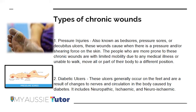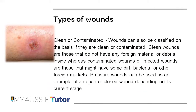Wounds can also develop into greater ischemia and cause necrosis of an entire region. Contaminated wounds are infected wounds that may contain dirt, bacteria, or foreign material inside them. They can be open or closed depending on their current stage. For example, a pressure sore is initially a closed wound; after contamination it becomes open, and if it worsens into a chronic wound, it becomes contaminated with external bacteria, dirt, and foreign material.